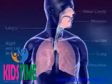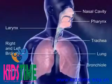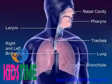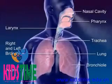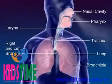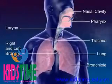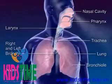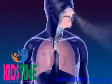The respiratory system moves air through the nose, pharynx, larynx, trachea and bronchus to the alveoli, where the gas exchange between oxygen and carbon dioxide occurs.